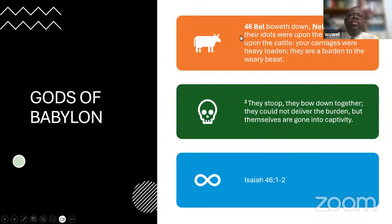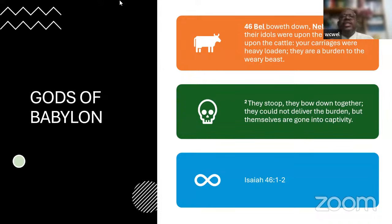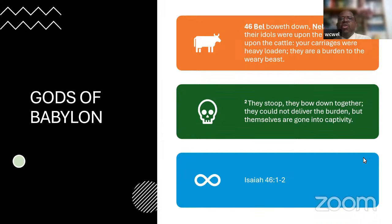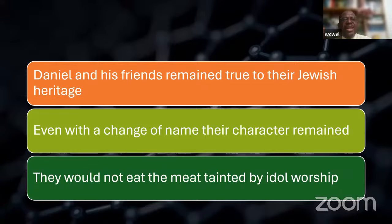From Isaiah 46:1: 'Bel boweth down, Nebo stoopeth. Their idols were upon the beasts and upon the cattle, your carriages were heavy laden, and they are a burden to the weary beasts. They stoop, they bowed down together, they could not deliver the burden, but themselves are gone into captivity.' God through Isaiah was sharing that the gods of Babylon could not walk or talk — they had to be carried by people and could not save. Yet people wanted to bow down and worship them. Daniel and his friends, however, remained true to their heritage.